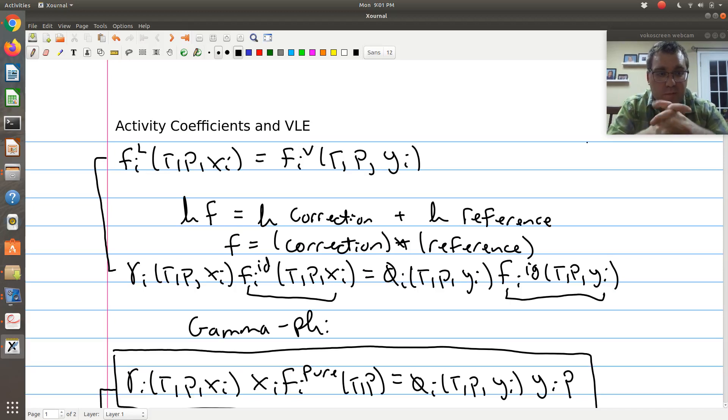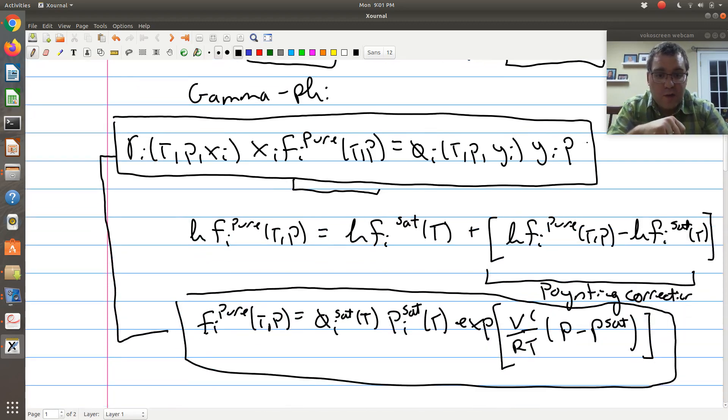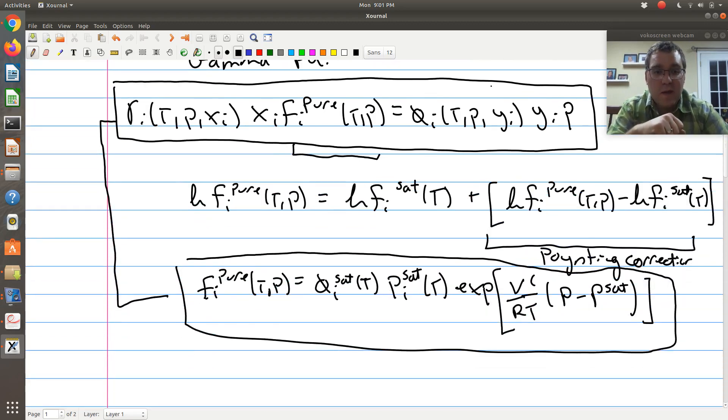Alright, so I want to pick up from where the last screencast ended. This would be part two of our discussion of activity coefficients in VLE. In the last screencast, we derived our gamma-phi criteria phase coexistence and ended with our expanded isofugacity expression. In the second box, I have my expression for the fugacity of component I in pure component state. What I'd like to do next is go back in time and using this gamma-phi method, let's re-derive Raoult's Law.